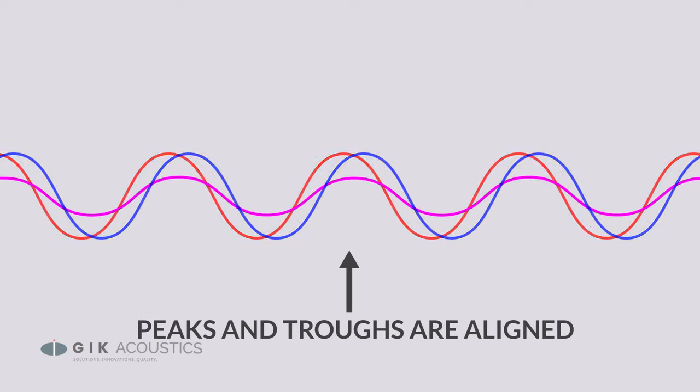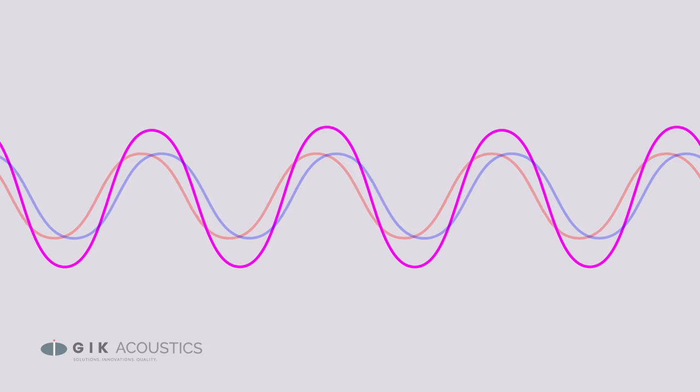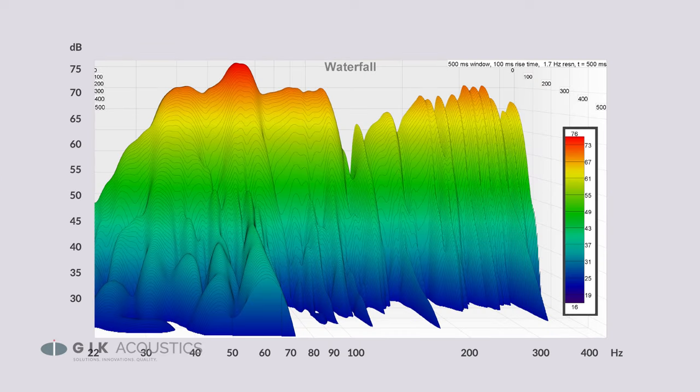So an in-phase sound will cause a peak or a buildup, whereas an out-of-phase sound will cause a null or cancellation. This is where you get the nasty peaks and nulls from all the reflections in your room that can make it hard to judge what you're actually listening to.